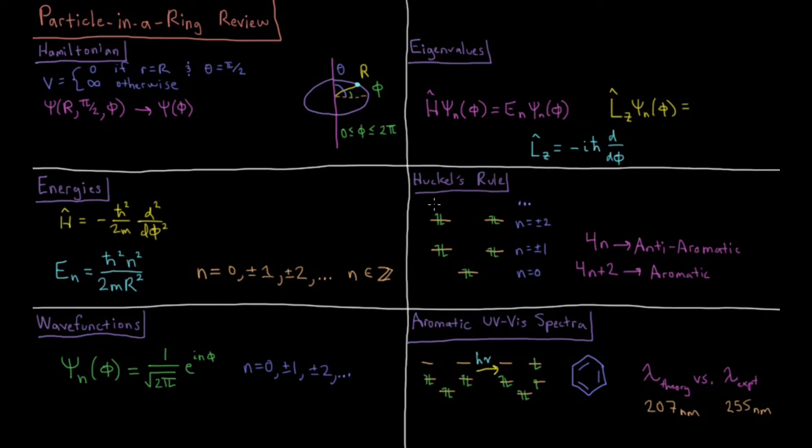Moving on, one of the applications of this is the particle in a ring system actually predicts what's called Huckel's rule. Huckel's rule is that if we have 4n electrons in an aromatic system that is anti-aromatic, and it very much doesn't like being anti-aromatic, and often will distort out of the plane in order to be not anti-aromatic. And if a molecule is 4n plus 2 pi electrons in a cyclic system, it'll be aromatic, and that'll be strongly stabilizing.